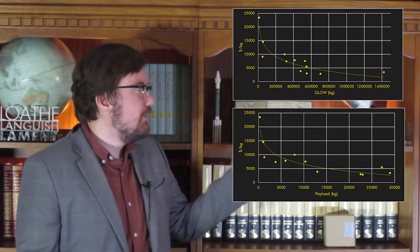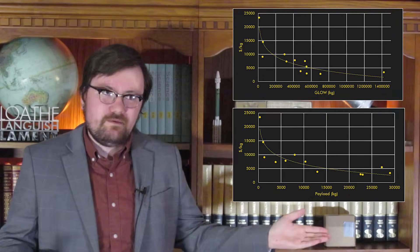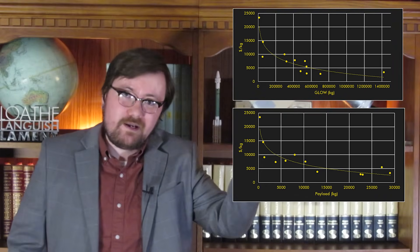See, the problem is Rocket Lab's Electron carries like 300 to 320 kilograms to low-earth orbit. It only costs $7.5 million per launch. Falcon 9 carries 22.5 metric tons to low-earth orbit expendable at $67 million per launch. See, you're not buying a kilogram of launch. We're excluding rideshare because that's weird and communism, so we're ignoring that for right now. You're buying an actual full launch. You can't buy a part of a launch. Again, no rideshare. You're buying the full launch.